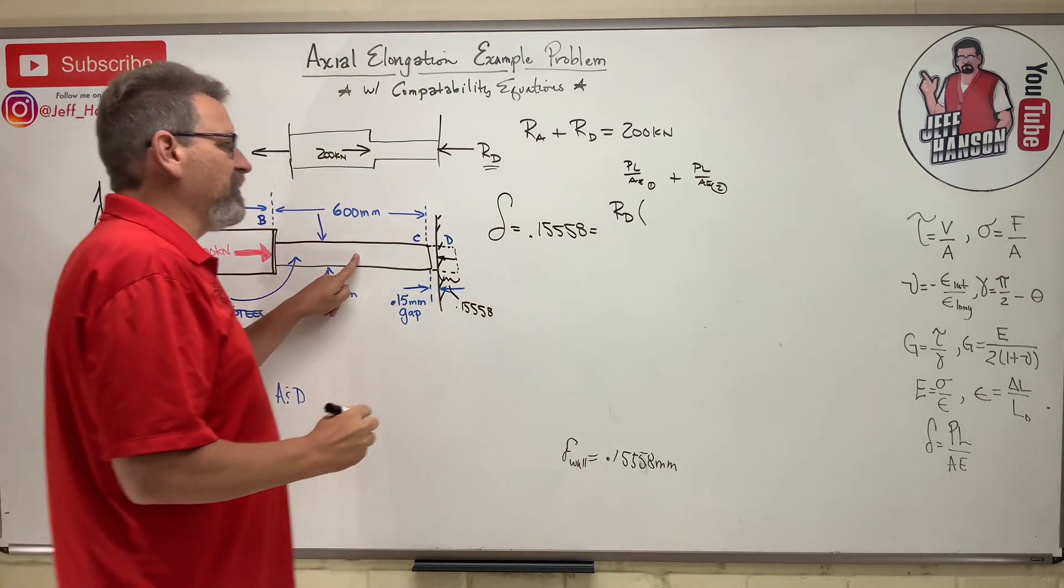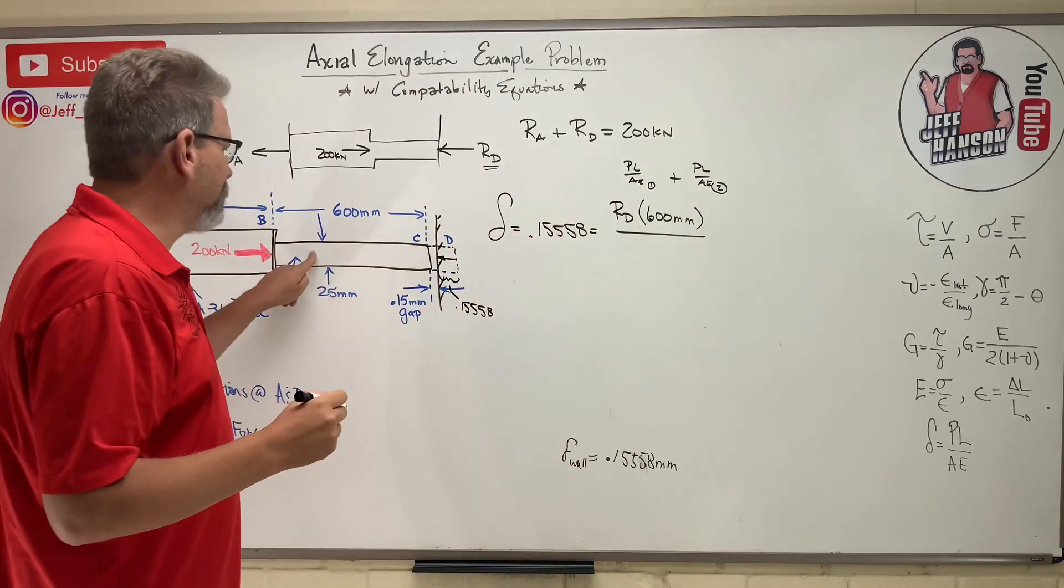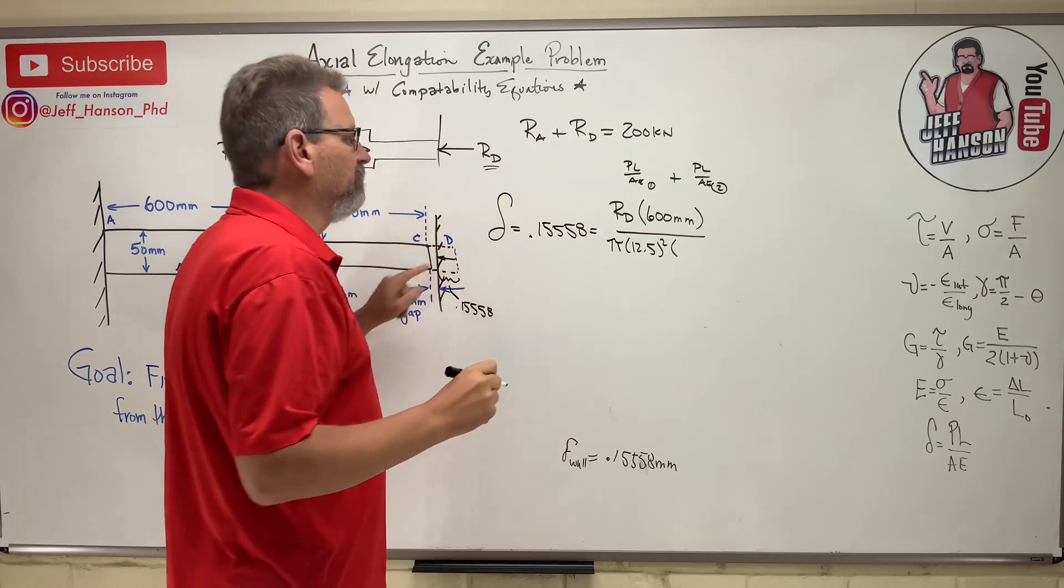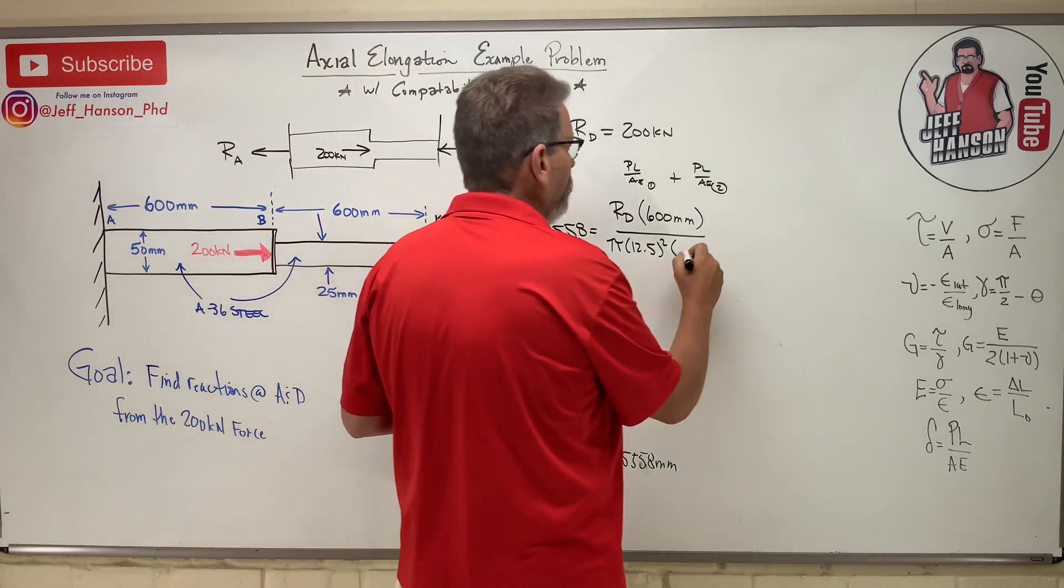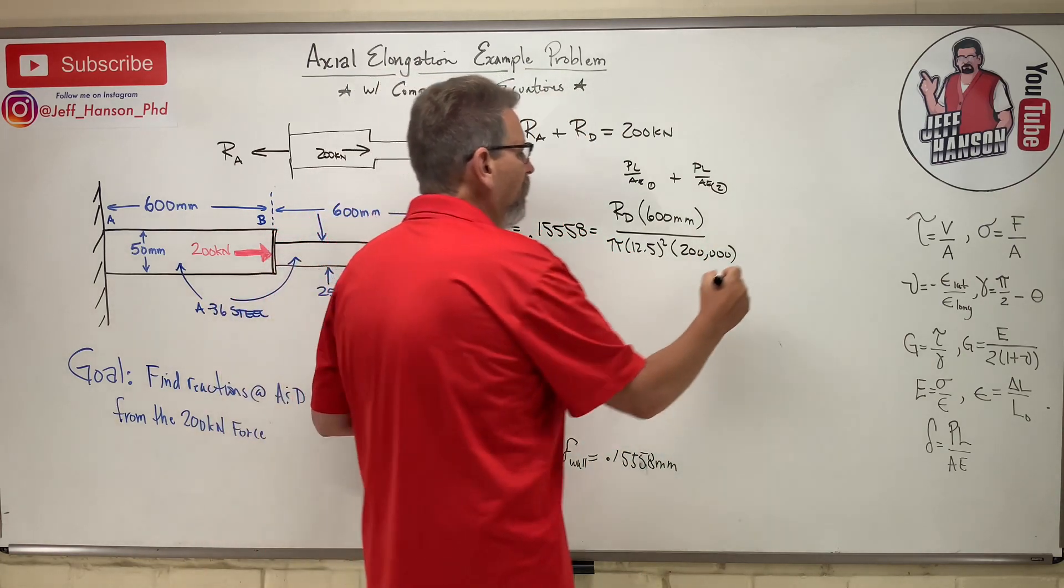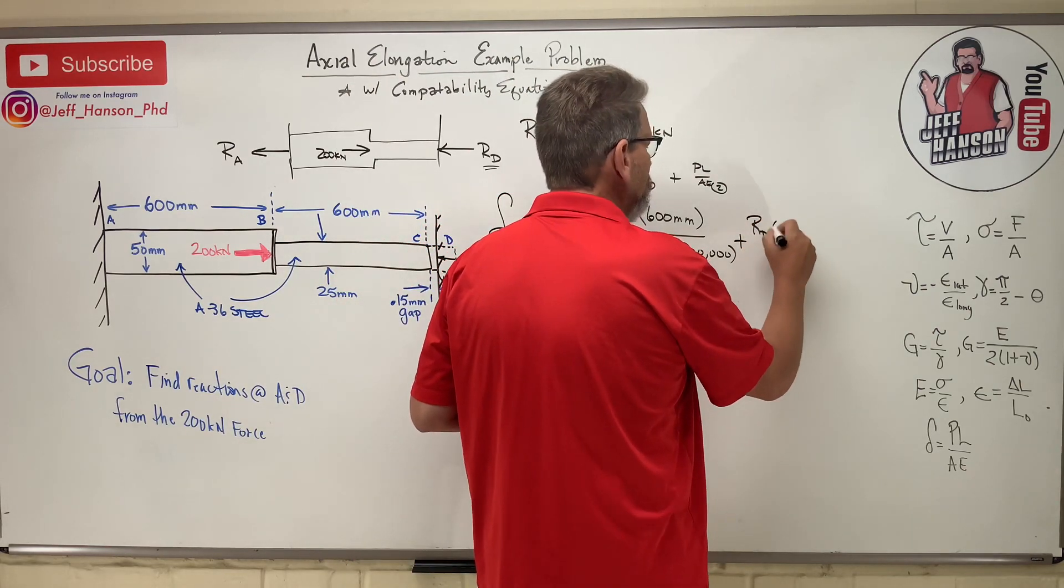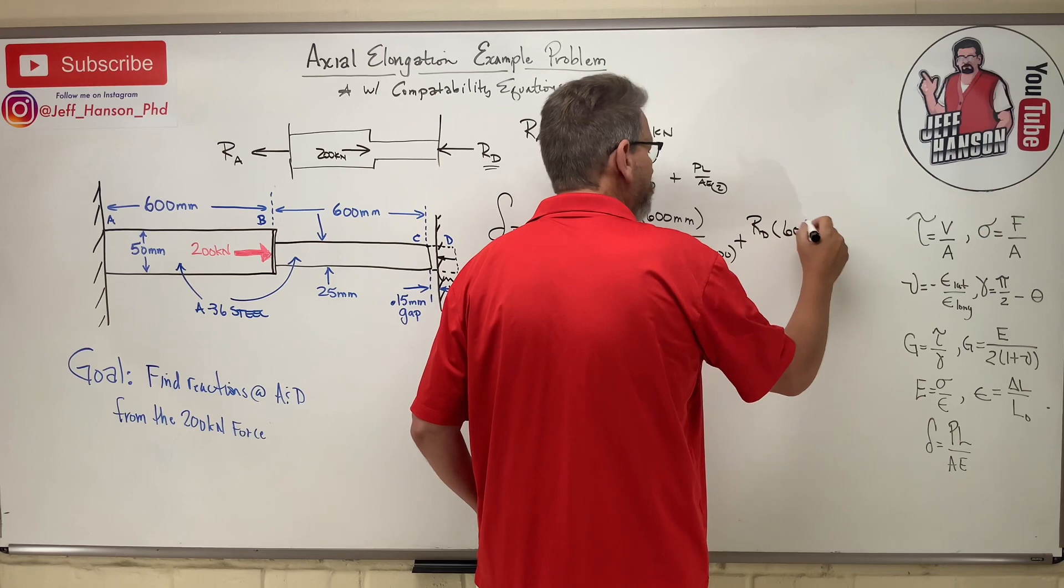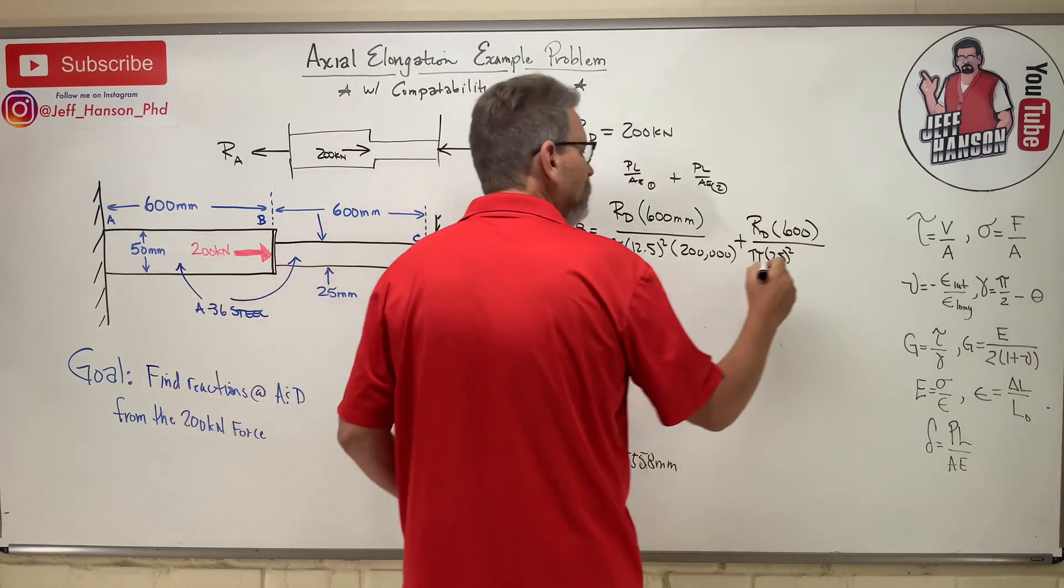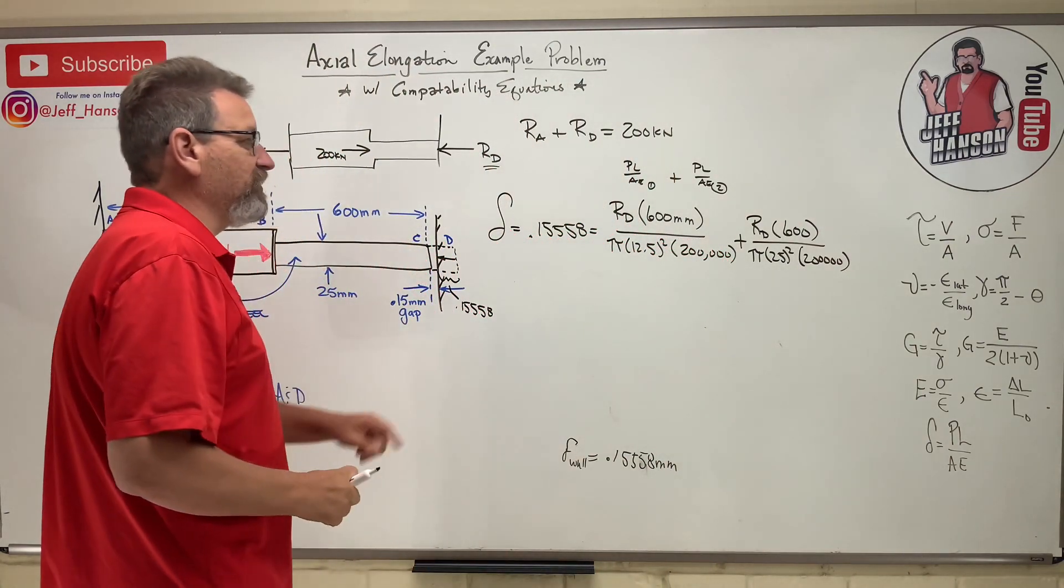So for this one, the length is 600 millimeters. Divided by A for this guy is pi times 12.5 squared times, what was it? 200 gigapascals, which was 200,000 megapascals. Plus, here comes the compression of this section, which is the same thing, force Rd times the length, 600 millimeters, again, divided by the area, pi r squared. It's 25 because this is 50 times 200,000. So let's put this in our calculator and we just got to solve for Rd.